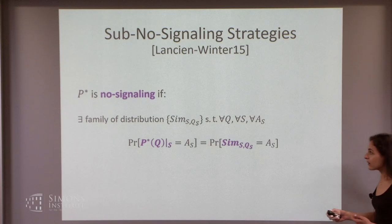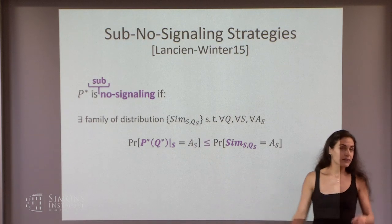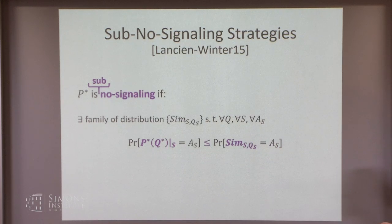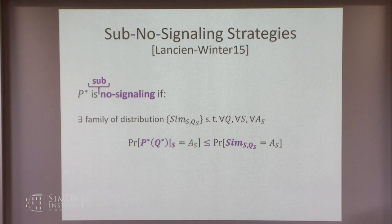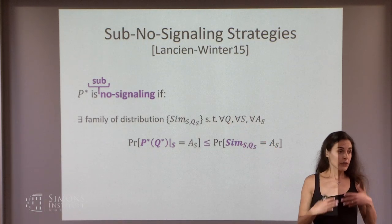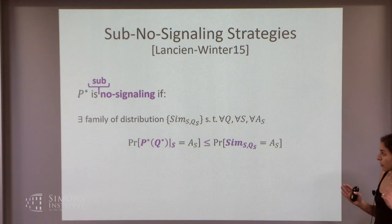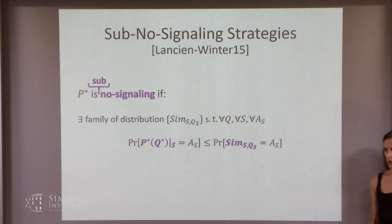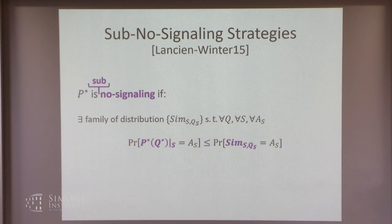The definition of sub-no-signaling changes equality to inequality: there exist distributions such that the probability, restricted to subset S, is at most the universal distribution. So the strategy doesn't need to be a full probability distribution — it can be a sub-distribution that sometimes aborts. If you condition on non-aborting, then it becomes signaling, which is exactly why aborting gives more power. The power of aborting seems like it only lowers your chance, but it actually gives more flexibility.